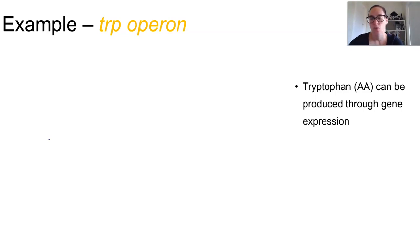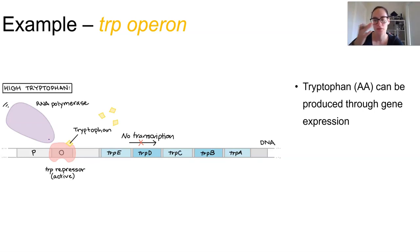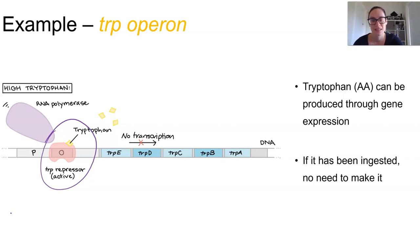Obviously if tryptophan has already been ingested, there is no need for the organism to make it themselves, so this gene doesn't need to be transcribed. In the presence of tryptophan, it actually binds this repressor. When tryptophan is present—if it has been ingested—there is no need to make it, so that repressor attaches. This is a kind of negative feedback: if something is already available it switches it off. However, the lac operon is a kind of positive feedback, so it does the opposite.